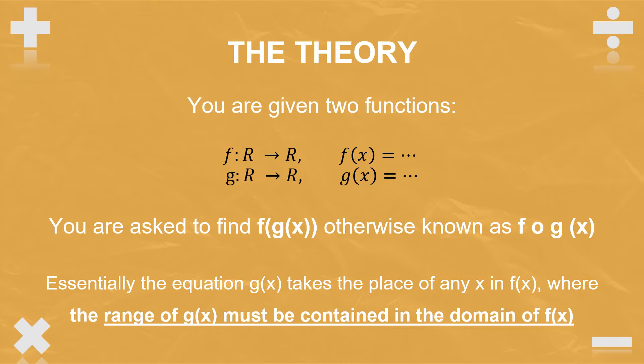Essentially, the equation g of x takes the place of any x in f of x. Where it gets tricky is the range of g of x must be contained in the domain of f of x for the function FOG to exist. It can also be worded in terms of GOF, which is g of f of x, so it's just the other way around — f of x will be contained in g of x.